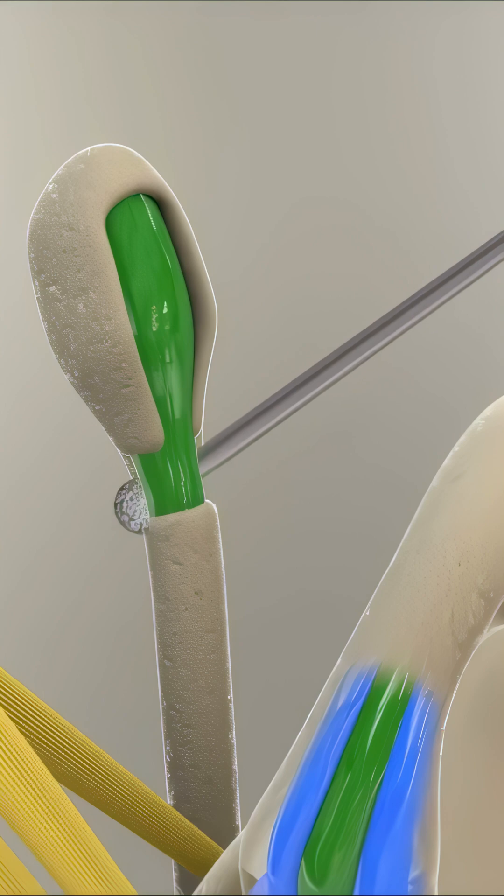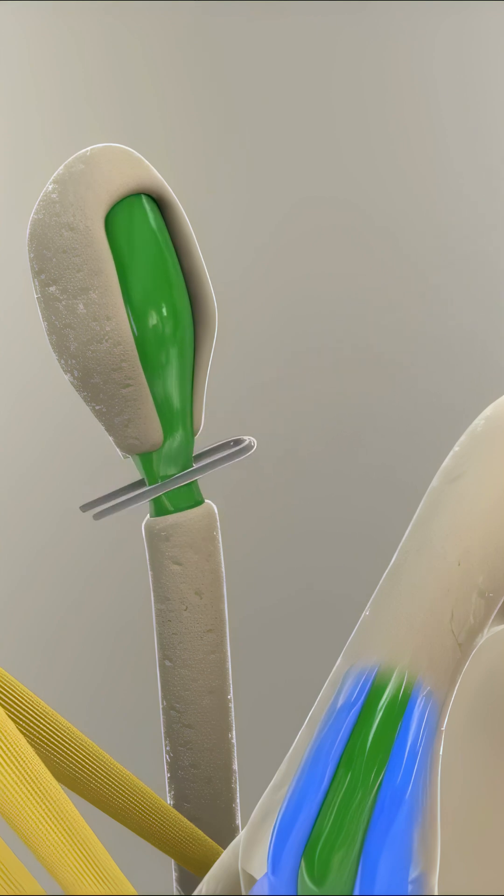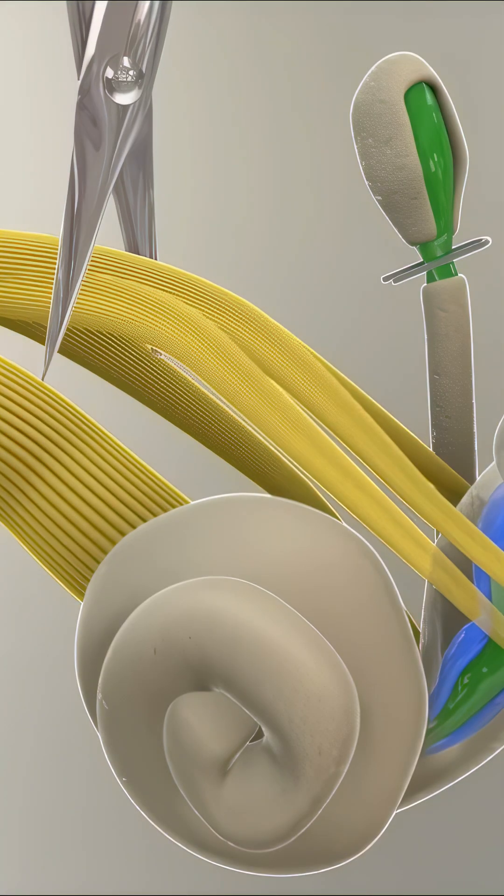An alternative is endolymphatic duct blockage. In this procedure, bone around the duct is removed and a clamp is applied to prevent the spread of fluid to other parts of the inner ear.